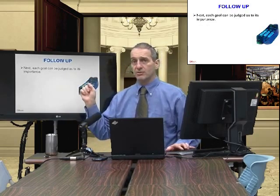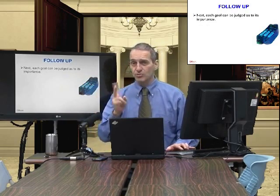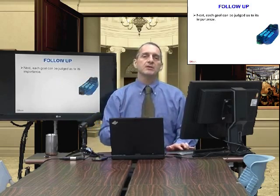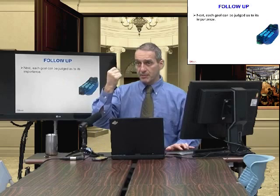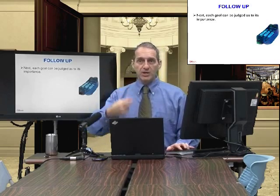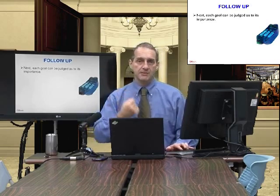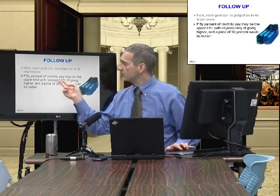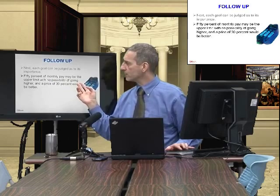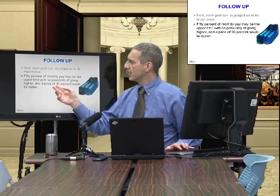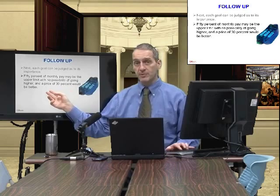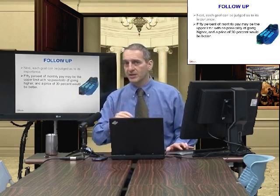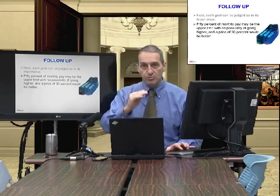Each goal can be judged for its importance, because now we have two goals. We're simplifying it — there may be more goals, but let's just do these two. Now we've got a price and we've got a feature. Which one is most important? Which one is less important? Which one should we focus on first? 50% of monthly pay may be the upper limit with no possibility of going higher, and a price of 30% would be better. So the price can be divided into sub-goals.